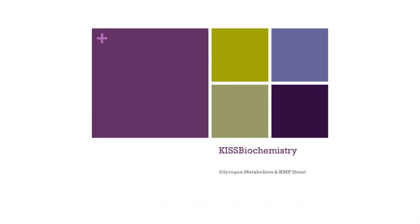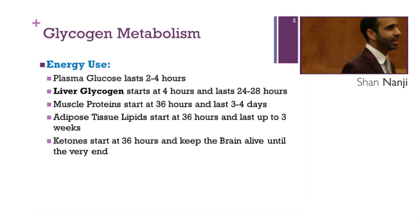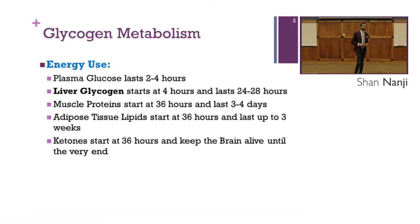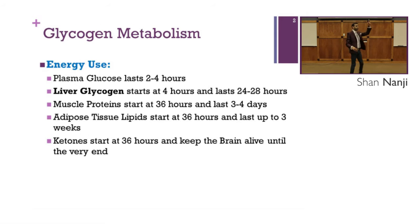Welcome back to kids biochemistry. This lecture we're going to talk about glycogen metabolism and the HMP shunt. Let's talk about glycogen energy use. Plasma glucose lasts two to four hours.